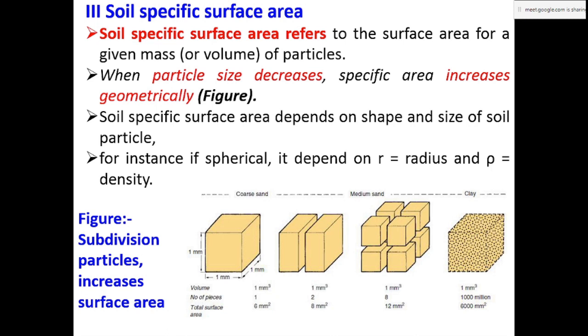Soil specific surface area depends on the shape and size of the soil particles. For instance, if spherical, it depends on the radius r and the density ρ. In this figure we can easily understand how the soil specific surface area increases when the size of the soil particle is decreased.